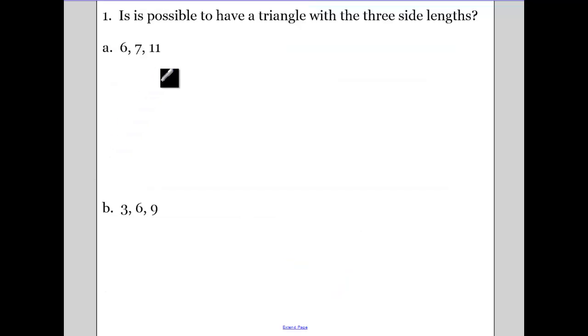Is it possible to have a triangle with these three side lengths? So this is using that triangle inequality theorem. Take the two smaller sides. Six plus seven. Is that greater than eleven? Well six plus seven is thirteen. So yes, that works.